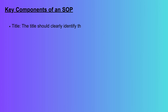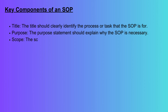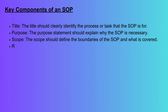Key components of a Standard Operating Procedure. Title: the title should clearly identify the process or task that the SOP is for. Purpose: the purpose statement should explain why the SOP is necessary. Scope: the scope should define the boundaries of the SOP and what is covered.